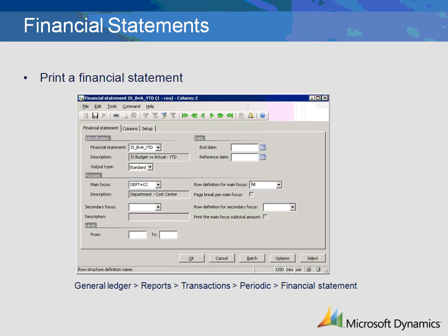We want the main focus to be Department and Cost Center. Dimension focuses must also be set up for different types of combinations that you would like to print financial statements. In this example, we have selected Department Cost Center Set. The financial statement will be printed for both Department and Cost Center dimensions.